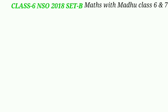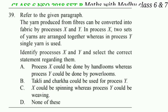Now question 39. Refer to the given paragraph. The yarn produced from fibers can be converted into fabric by processes X and Y. In process X, two sets of yarns are arranged together, whereas in process Y, a single yarn is used. As per the information given, process X is weaving and process Y is knitting. So the correct answer will be option D: none of these, as options A, B and C are all incorrect statements.